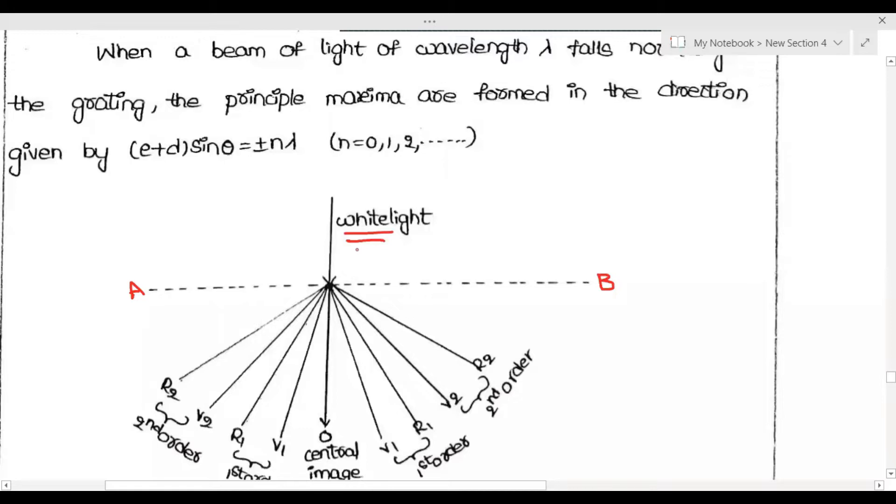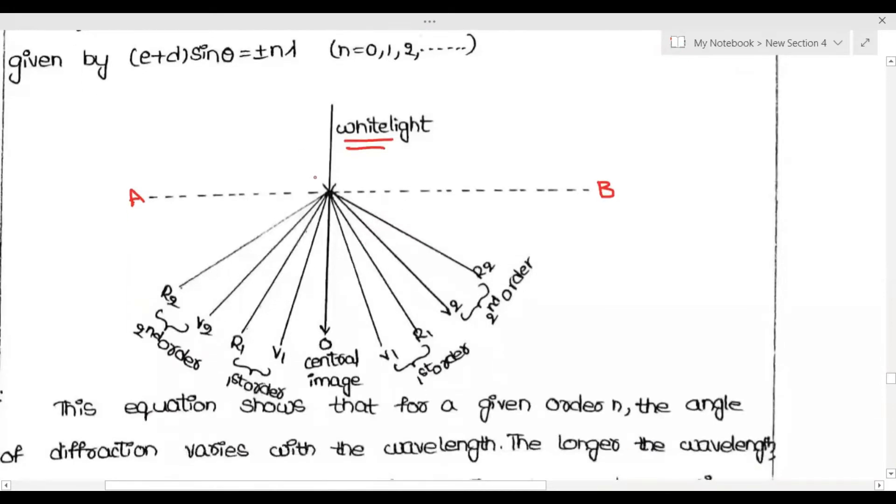Up to yesterday we used monochromatic light, like a sodium vapor lamp or some monochromatic light source as a parallel beam of light. But now replace the monochromatic light with white light.